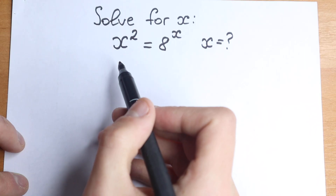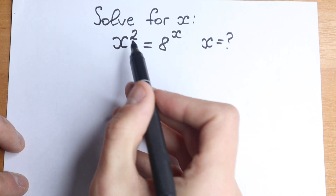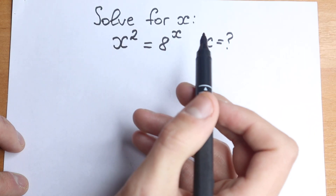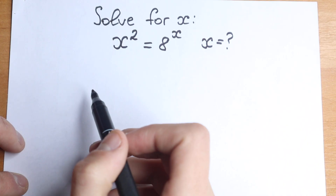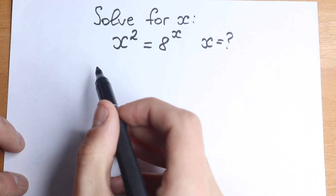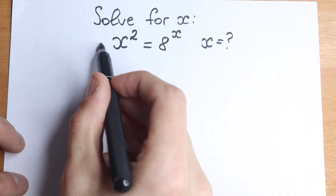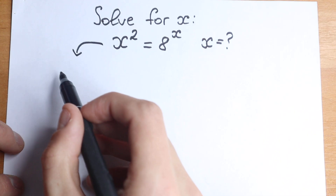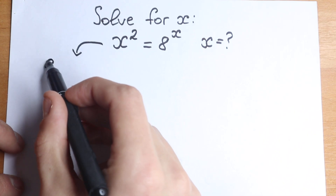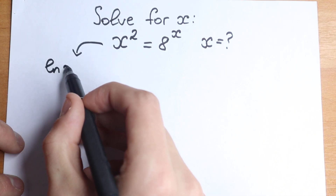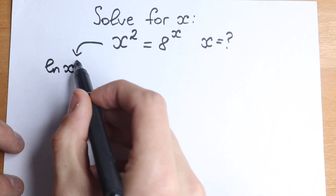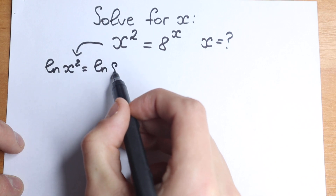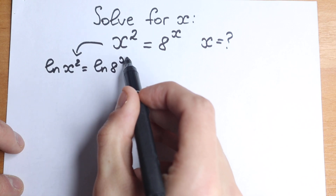We start with natural log because we have powers and variables here, so it's really great to start with natural log. So we have natural log of x squared equal to natural log of 8 to the power x.